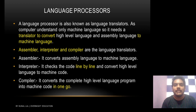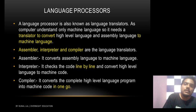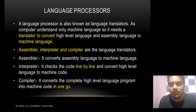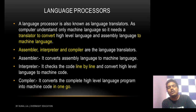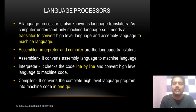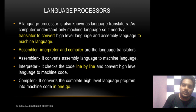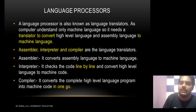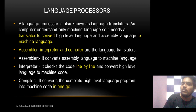Next is language processor, also known as language translator. The computer understands only machine language, so it needs a translator to convert high level language and assembly language into machine language. That is why we need a language processor. Assembler, interpreter, and compiler are all types of language translators that convert high level or assembly language into machine language.